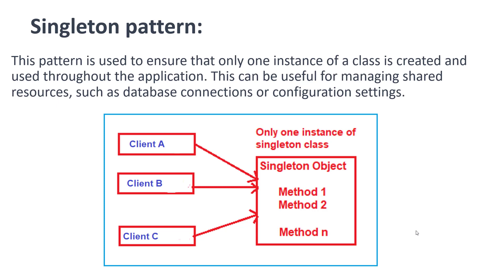The last one is the Singleton pattern, which is also a very popular pattern. This pattern is used to ensure that only one instance of a class is created and used throughout the application. This is useful for managing shared resources such as database connections or configuration settings. It is especially used with in-memory databases, where only a single instance is needed for the entire application. In the diagram, a singleton object with method one, method two, and method N is shared by client A, client B, and client C — all clients use the same object of the class.